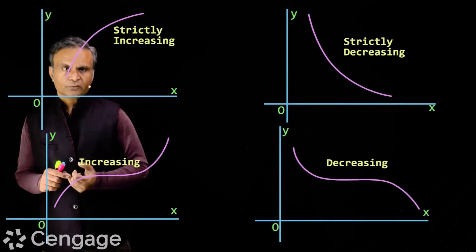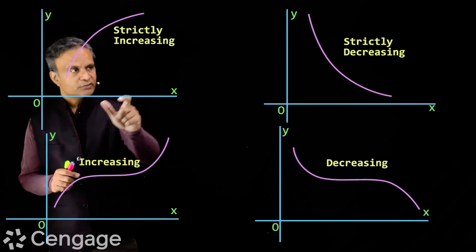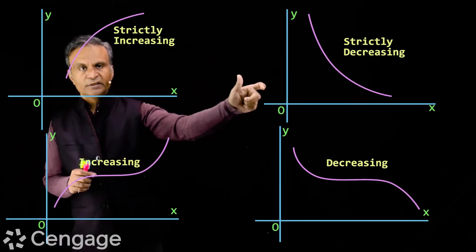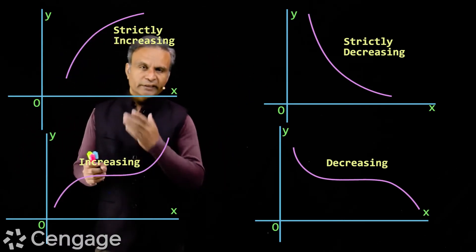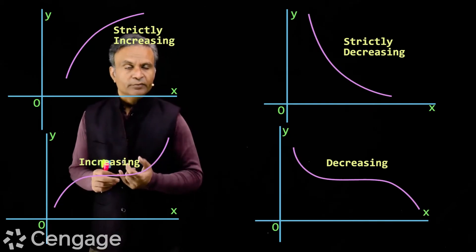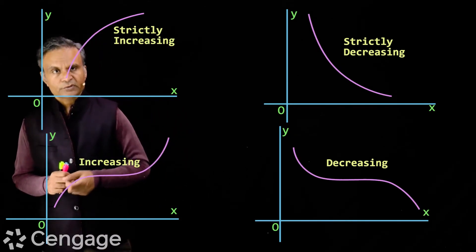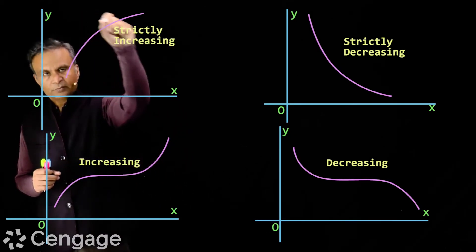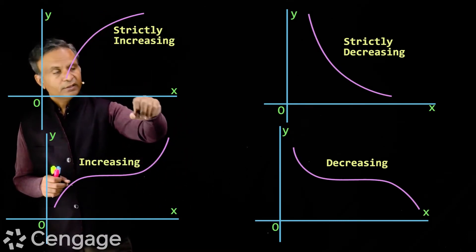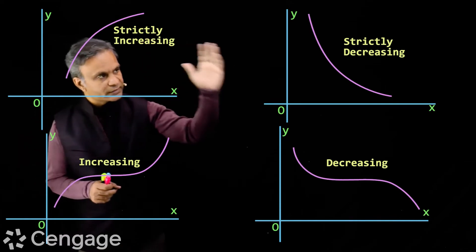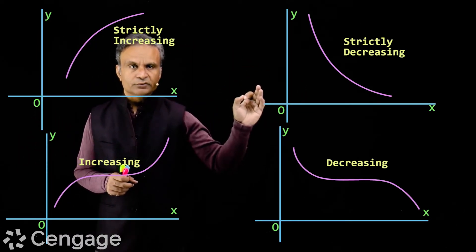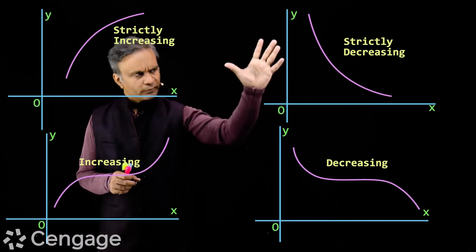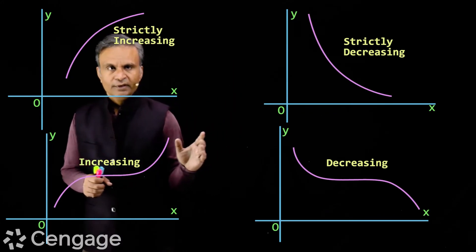So we now have four types of functions: strictly increasing, strictly decreasing, increasing, and decreasing. A strictly increasing function can also be called an increasing function, and a strictly decreasing function can also be called a decreasing function.